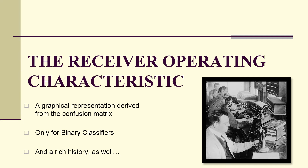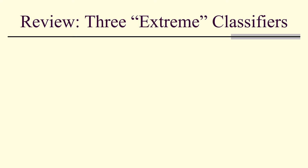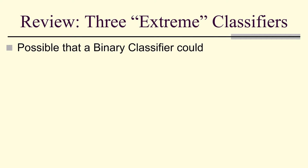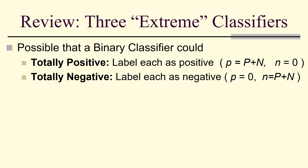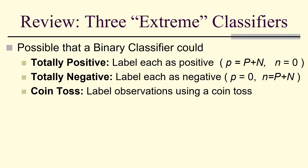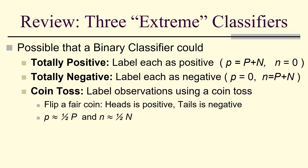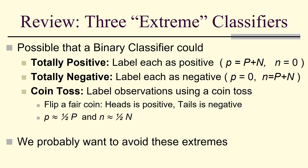The receiver operating characteristic is a graphical representation derived from the confusion matrix, which unfortunately only works for binary classifiers. It has a rich history. Recall we have three extreme classifiers: totally positive (everything predicted positive), totally negative (everything predicted negative), or a coin toss, where labels are assigned using a fair coin — so the probability of positive is one half and the probability of negative is one half.